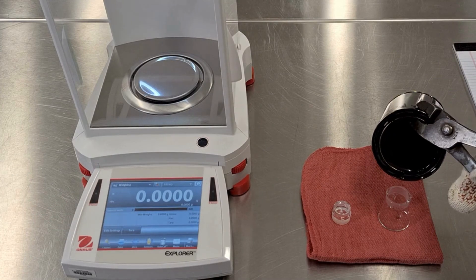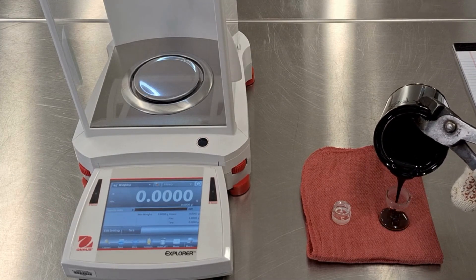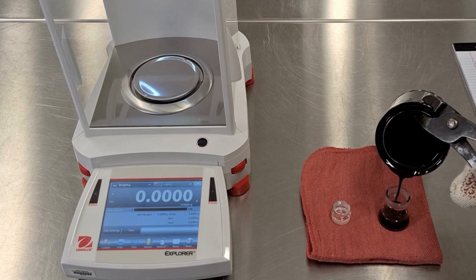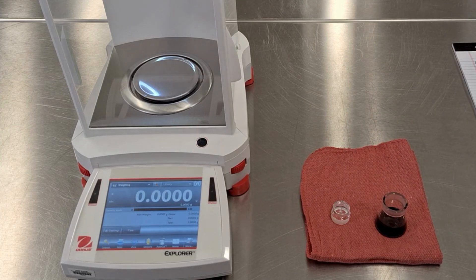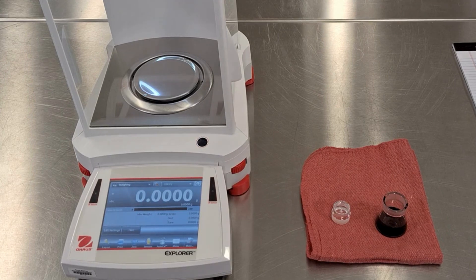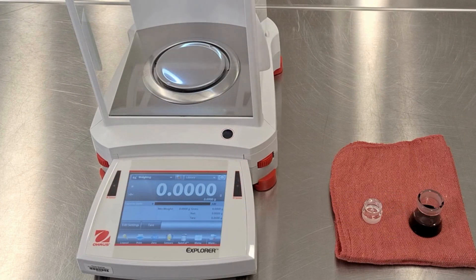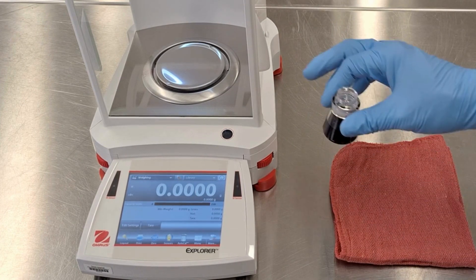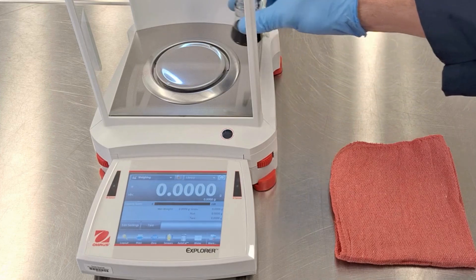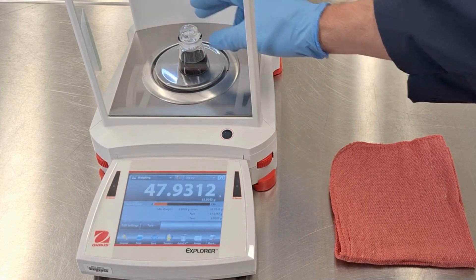Ensure the pycnometer is clean, dry, and warmed. Fill the pycnometer to about three-quarters of its capacity. The material should not touch the sides of the pycnometer above the final pouring level. Avoid introducing air bubbles. Allow the pycnometer to cool to room temperature for at least 40 minutes. Weigh the pycnometer to the nearest 0.001 grams and record this weight.